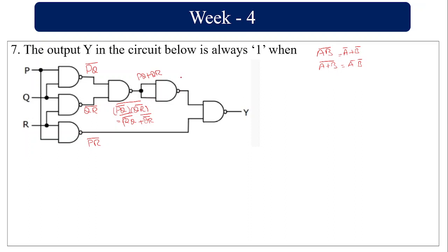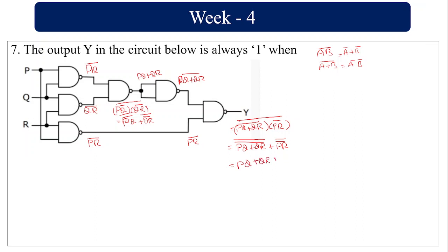Continuing the circuit analysis: giving pq + qr as input to the next NAND gate along with (pr)' produces (pq + qr)' · (pr)' whole bar. Applying De Morgan's: (pq + qr)'' + (pr)'' = pq + qr + pr. So Y = pq + qr + pr. If two or more inputs are 1, the output is 1, meaning the output is always 1 when any two of p, q, r are 1.